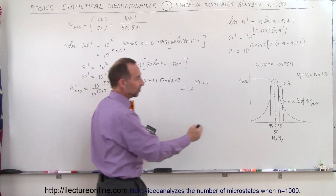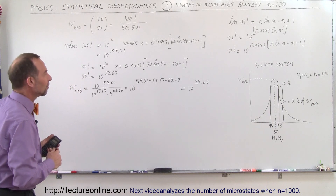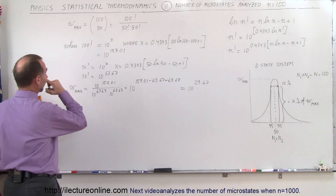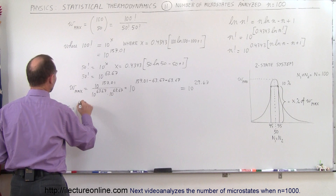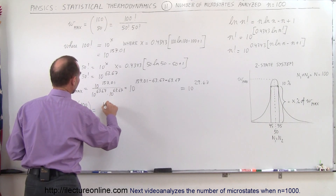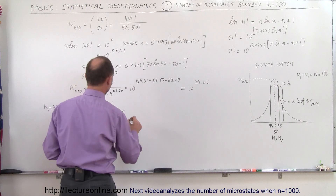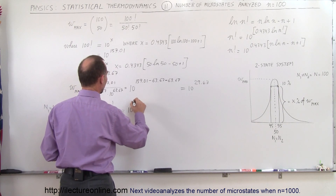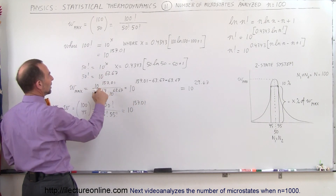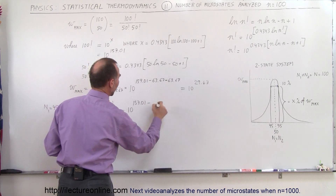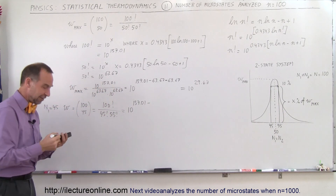Now, what will be the number of microstates when we're 10% off that maximum — when N1 equals 45 or N1 equals 55? It doesn't matter which, because the distribution is symmetric. We need to find the number of microstates when N1 equals 45: that's 100 factorial divided by 45 factorial times 55 factorial, equal to 10 raised to 157.01 (the numerator stays exactly the same).